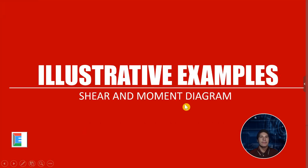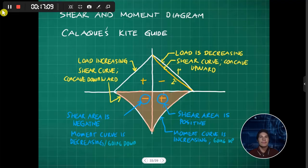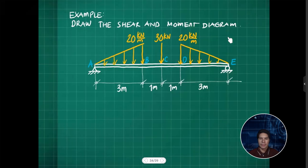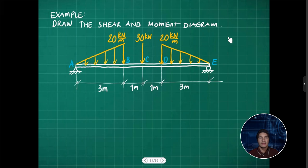Next are the illustrative examples. We will use the Kalakis Kite method in creating the shear and moment diagram. In our first example, we draw the shear and moment diagram for a beam subjected to a varying load and a point load — specifically a varying load of 20 kN/m and a point load of 30 kN.